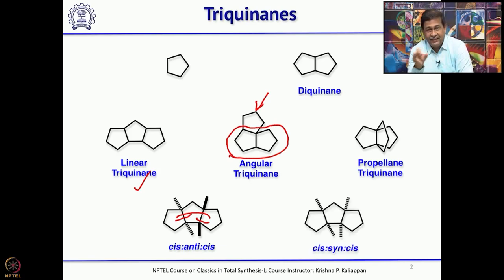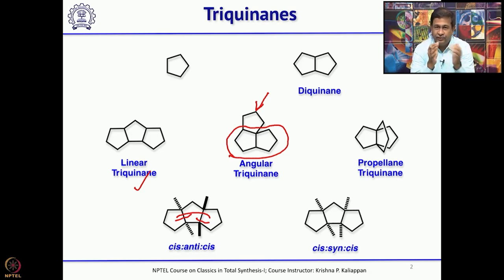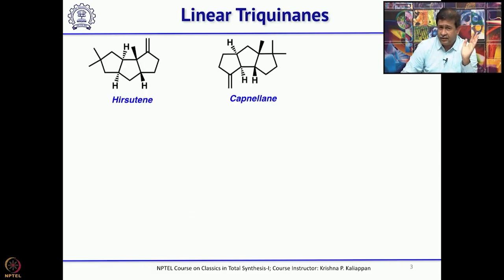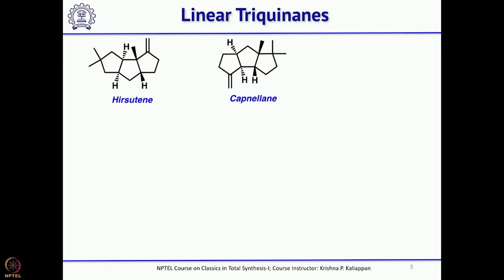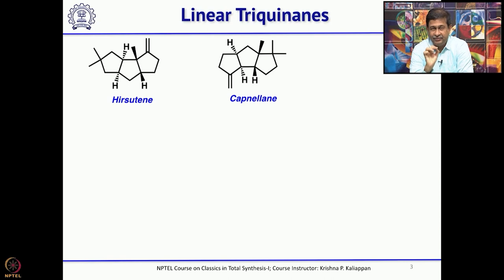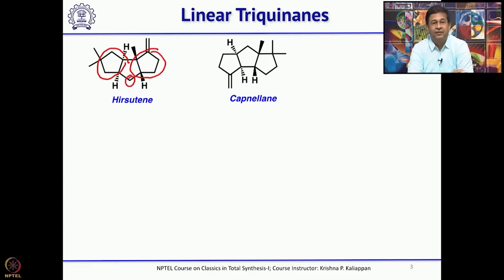You also have the cis-syn-cis system. When you look at many natural products belonging to linear triquinines, you will see both skeletons present. If you look at the linear triquinines closely, the core structure has 11 carbon atoms — two 5-membered rings plus one extra carbon atom which is also part of a 5-membered ring — forming the core structure of any triquinine.